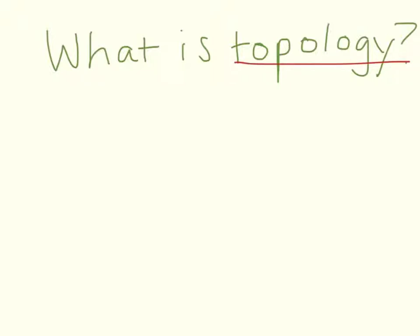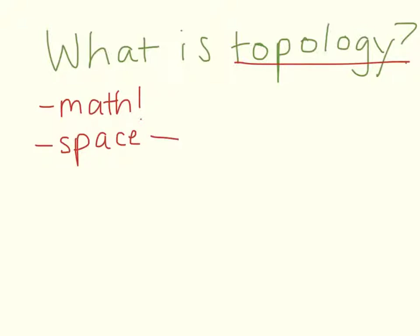Topology is a mathematical study that concerns itself with the understanding of space, dimension, and transformation. Space is the set of all points, and dimension is a characteristic of space — specifically, the number of coordinates required to enumerate a point in space.